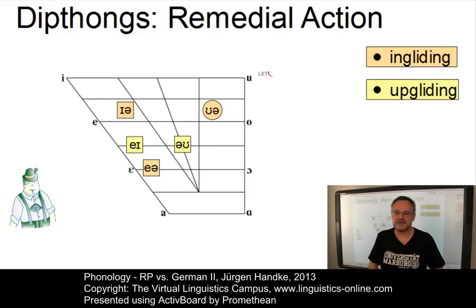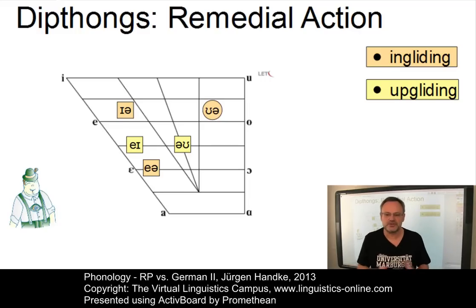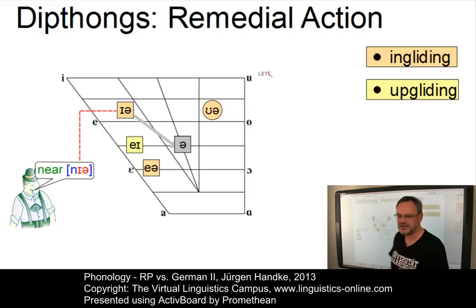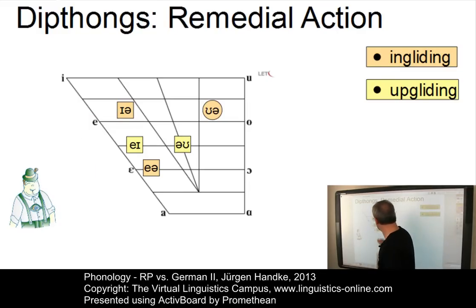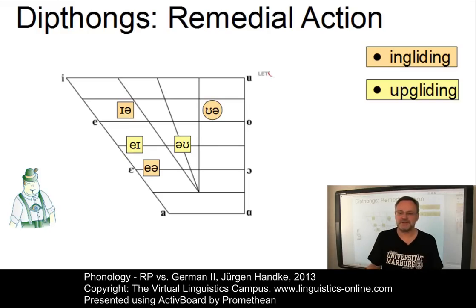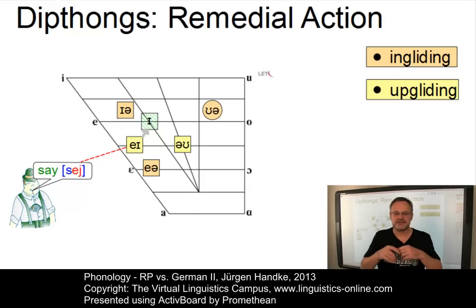In the case of the ingliding diphthongs, Germans are confronted with the R problem. As soon as we see a post-vocalic orthographical R, we should avoid the low-central off-glide and use the schwa instead. Furthermore, we should not make the onsets too high in all three cases — concentrate on saying NEAR, HERE and not HER, SURE and not SURE. In the two remaining cases, Germans should concentrate on the addition of an off-glide, as in SAY rather than SEH.